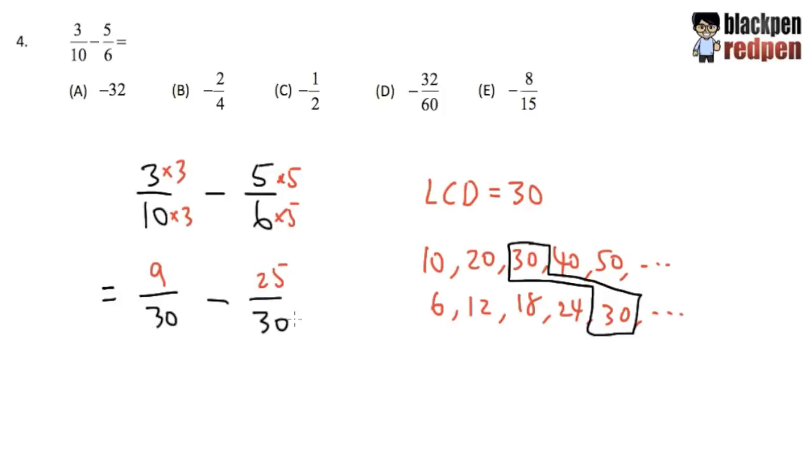And all we need to do now is that we know when we subtract fractions, the denominator will stay the same. So 30 and 30, the denominator will stay to 30. But then we just work out the top. Here we have 9. And then we are going to subtract 25. 9 minus 25 is equal to negative 16. So that's pretty much the result.